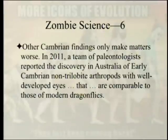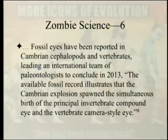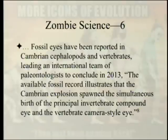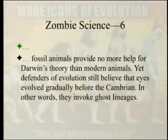Other Cambrian findings only make matters worse. In 2011, paleontologists reported the discovery in Australia of early Cambrian non-trilobite arthropods with well-developed eyes comparable to those of modern dragonflies. Fossil eyes have been reported in Cambrian cephalopods and invertebrates, leading an international team to conclude in 2013: 'The available fossil record illustrates that the Cambrian explosion spawned the simultaneous birth of the principal invertebrate compound eye and vertebrate camera-style eyes.' Not just trilobites — the vertebrate eye goes back that far. Fossil animals provide no more help for Darwin's theory than modern animals, yet defenders invoke ghost lineages — essentially vaporware.